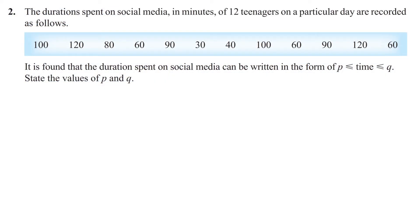Number 2: The duration spent on social media in minutes of 12 teenagers on a particular day is recorded as follows. It shows that the duration spent on social media can be written in the form of time is between P and Q. State the values of P and Q. P means the minimum, so it's 30 minutes. Q means maximum, so it's 120.